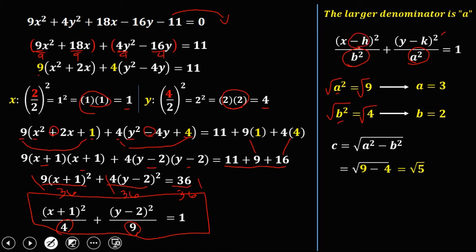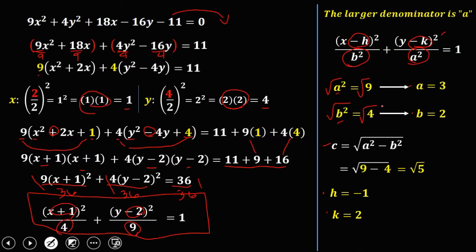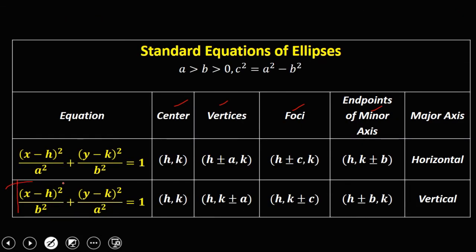From the standard equation, since we have (x + 1), the h value is negative 1. And from (y - 2), k is positive 2. So we now have all the values: a = 3, b = 2, c = √5, h = -1, k = 2. Since the larger denominator is under y², the formula we use is x²/b² + y²/a².